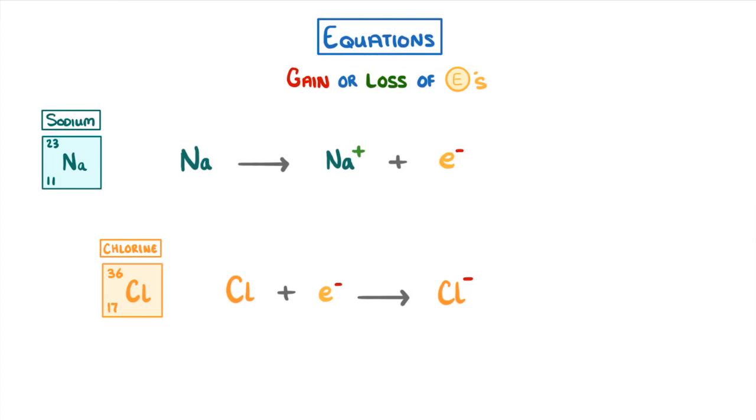So as you can see, if the atom is becoming a positive ion and losing electrons, then we place the electron on the right of the reaction. While if the atom is gaining electrons, we place the electron on the left to show that it's combining with the atom.